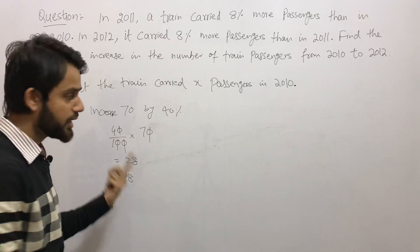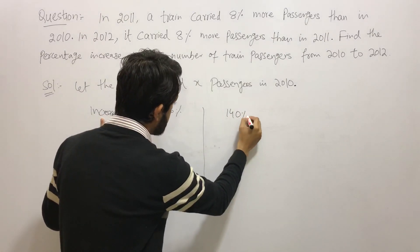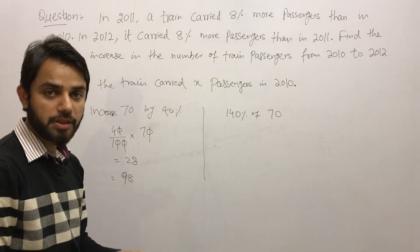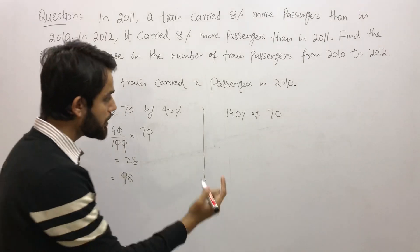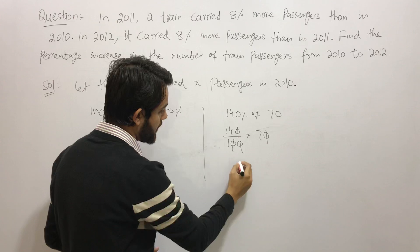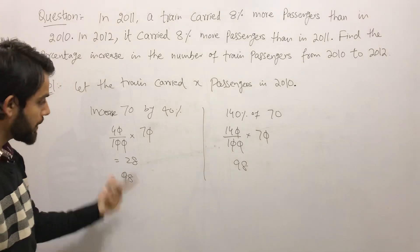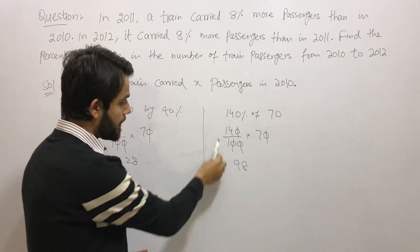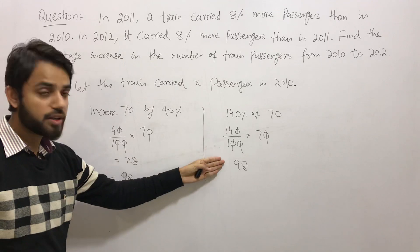We can also solve this using Method 2. To increase 70 by 40%, we directly calculate 140% of 70. This is because 100% represents your original 70, and we add 40%, giving 140% of 70. So 140% of 70 — that is 1.40 × 70 — gives you 98. I prefer this method because it is easier, and you won't forget whether to add or subtract.